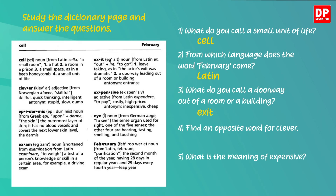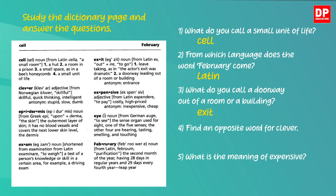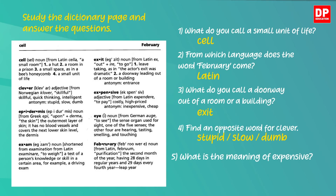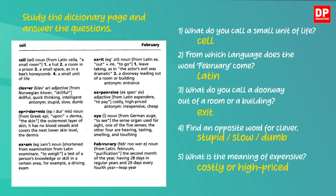What about the fourth? Find the opposite word for 'clever.' Look at the dictionary entry for the adjective 'clever.' Can you see the word antonym there at the end? As you know, antonym means the opposite. There are three opposites here: stupid, slow, and dumb — so you can write any one of the three words as your answer. Now the fifth one: what is the meaning of 'expensive'? It has only one meaning — costly or high priced. So you have to write that as your answer. Hope you could find answers to all the questions correctly.